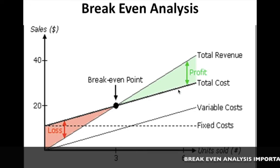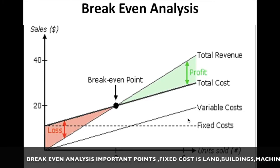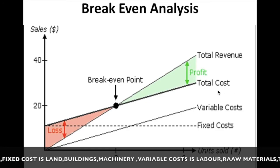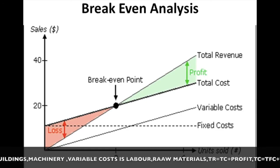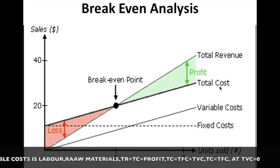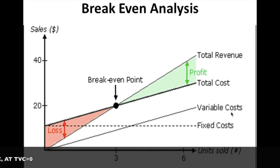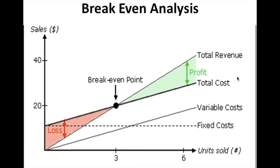Total cost is the total investment needed for starting the sugarcane juice making business. For starting the business, we have to first buy a sugarcane crusher, buy raw materials for making the sugarcane juice, and employ a labor. All of these form the total cost. The total cost formula is: Total Cost = Fixed Cost + Variable Cost.